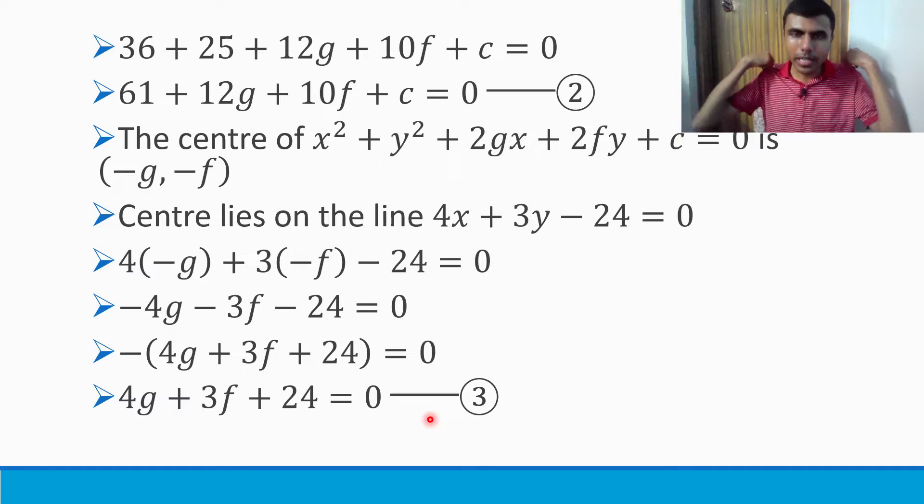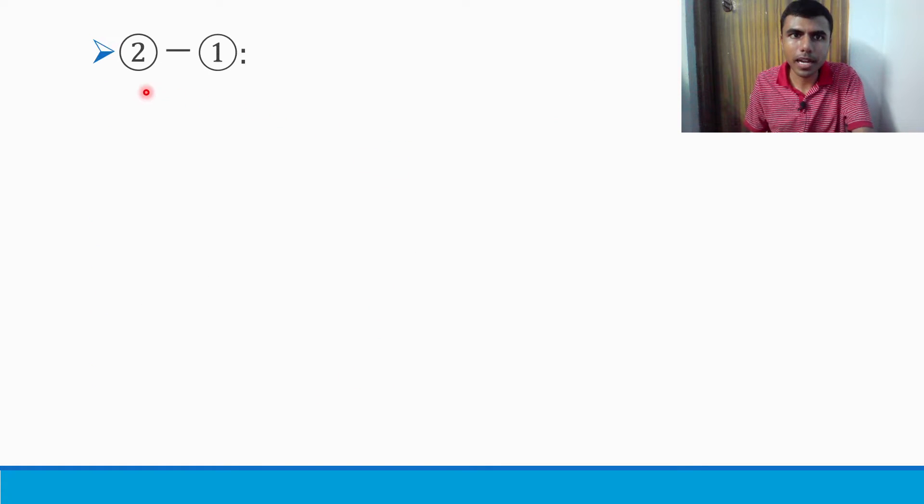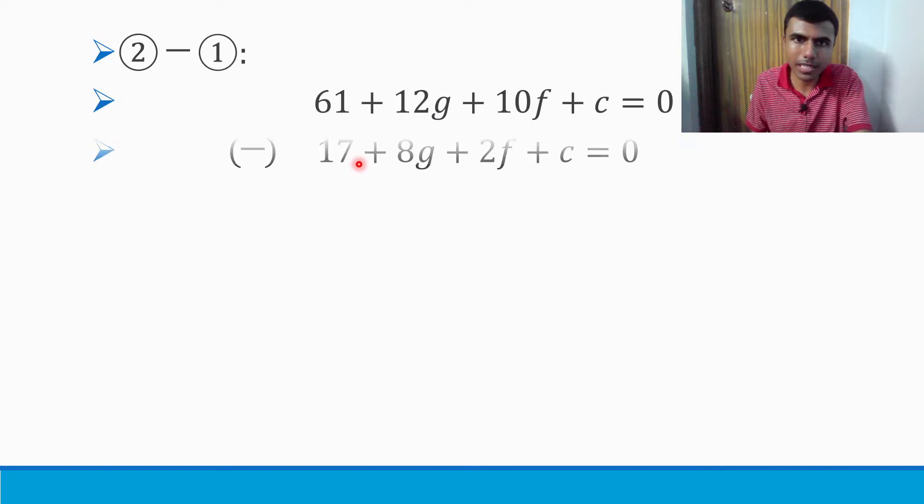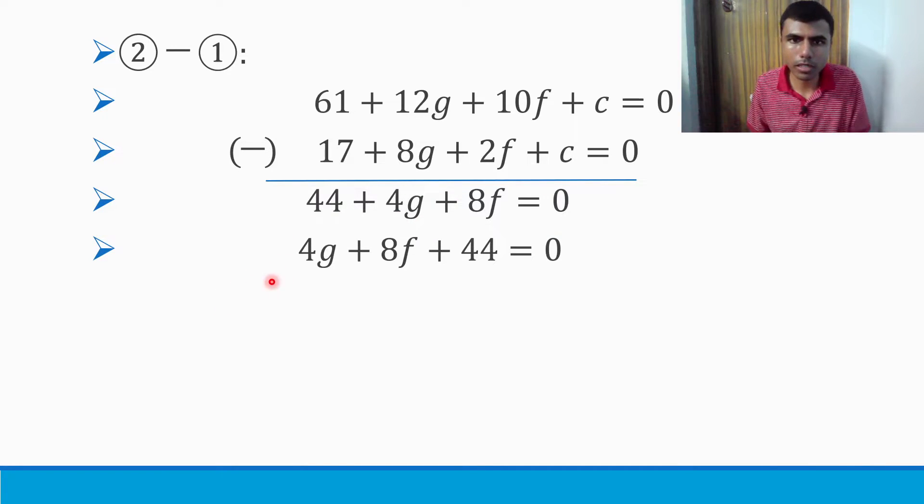Now, how to get another equation without c? Just do equation 2 minus equation 1. If you subtract those two, I'm going to get an equation without c. So 61 - 17 plus 12g - 8g plus 10f - 2f, and c minus c gets cancelled. This gives 44 + 4g + 8f = 0.